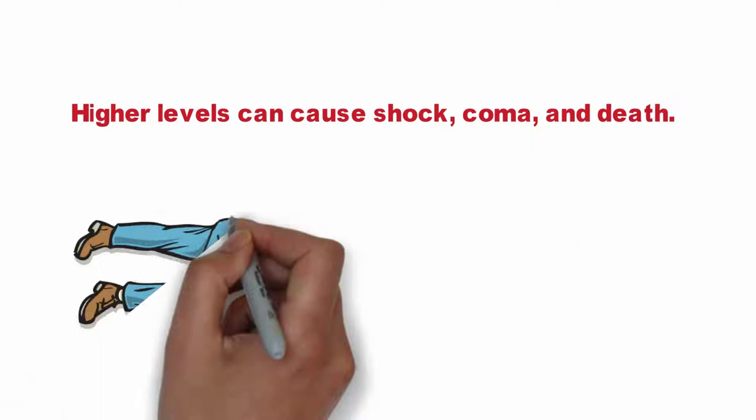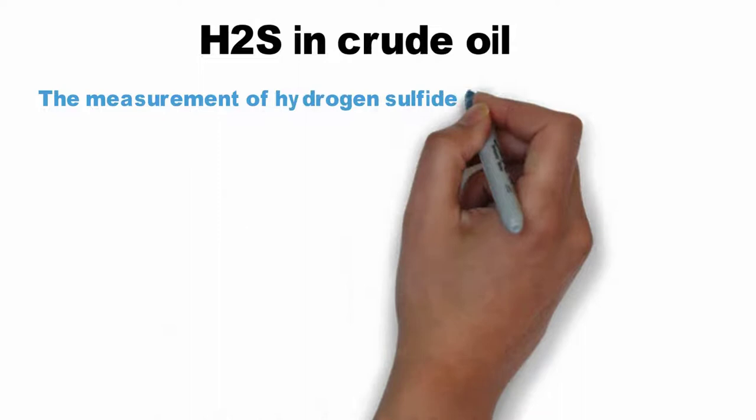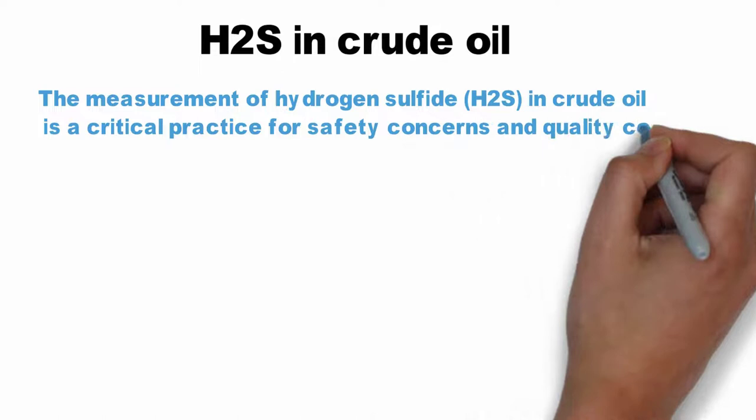The measurement of hydrogen sulfide H2S in crude oil is a critical practice for safety concerns and quality control. Hydrogen sulfide H2S is heavier than air and will settle into low areas.